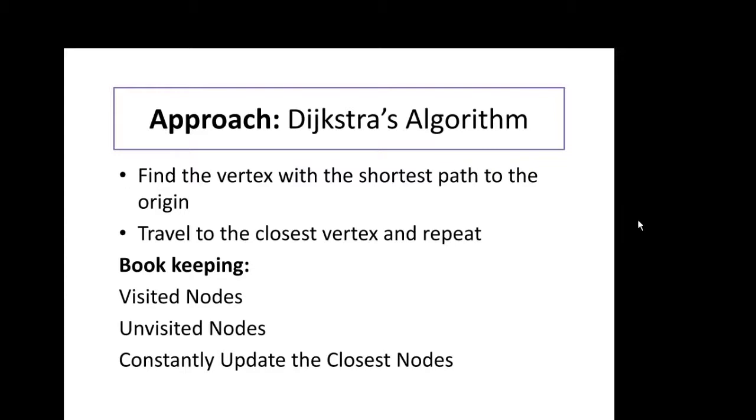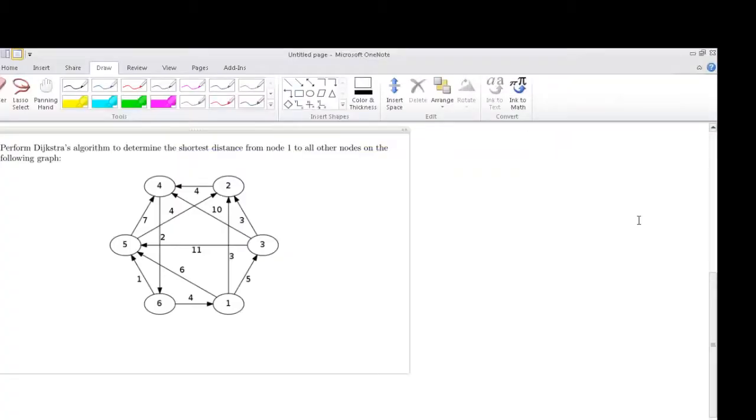One thing to keep in mind is there's quite a lot of bookkeeping. That means we have to constantly keep track of the visited nodes, unvisited nodes, and update the closest nodes. So those are just words, let's get into a problem. We have our graph here and we are asked to find the shortest distance from node 1 to all the other nodes. The first step is to create an adjacency matrix to represent this graph.